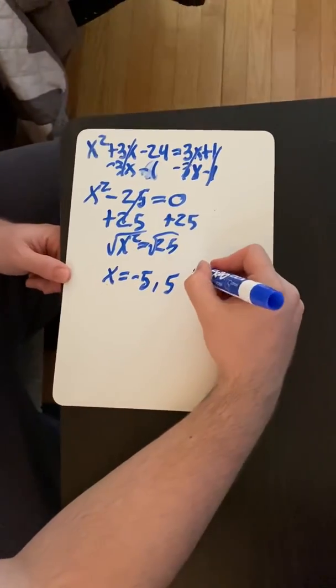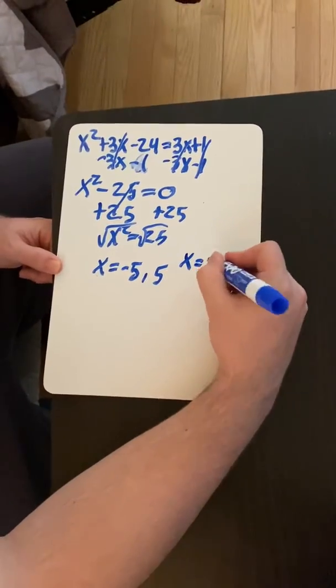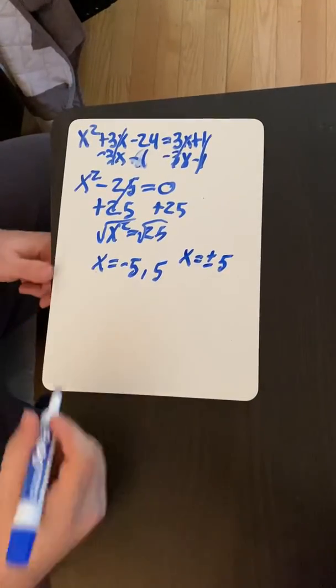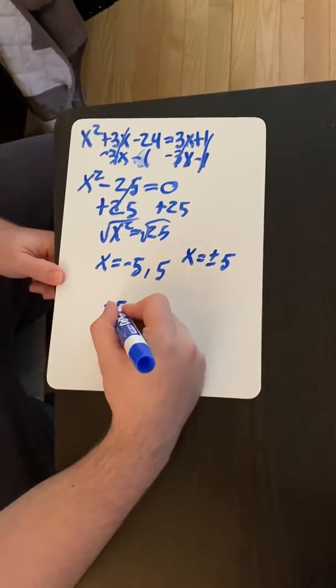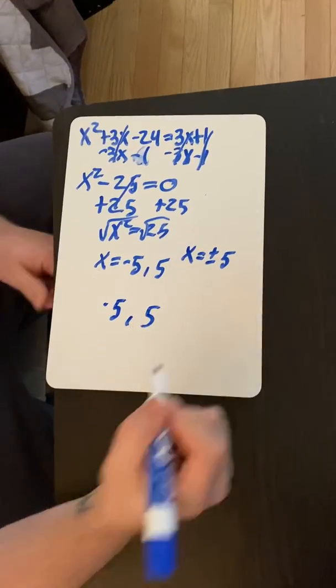So I usually wrote that in class as x equals plus or minus 5. Delta math, you're going to have to write negative 5 comma 5 to submit that answer.